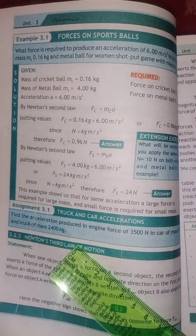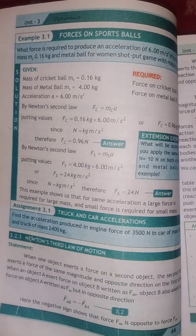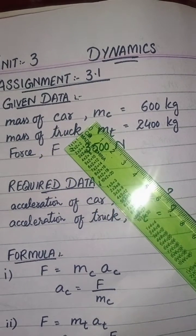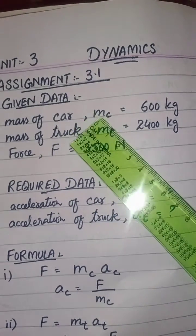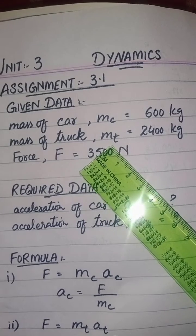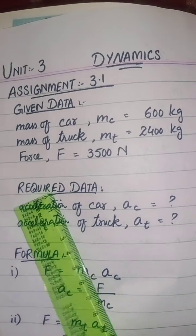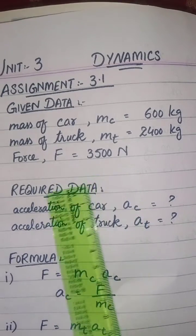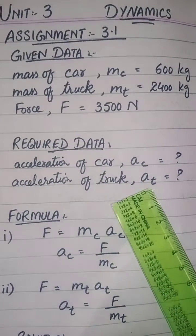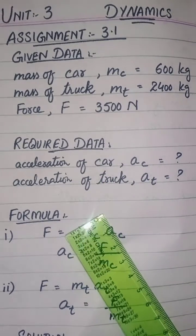We will find the acceleration one by one — first the acceleration of the car, then the acceleration of the truck. The given data: mass of car (mc) equals 600 kilogram, mass of truck (mt) equals 2400 kilogram, and force F equals 3500 Newton. Required: acceleration of car (ac) and acceleration of truck (at).